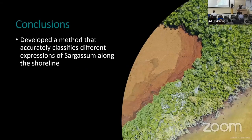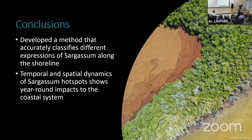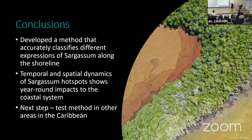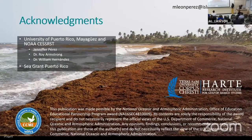To conclude, we were able to develop a method that accurately classified three types of expression of sargassum. The temporal and spatial dynamics show that impacts are occurring during the whole year. The next step will be to apply this method in other areas in Puerto Rico and also in the Caribbean. I would like to thank all the people and entities that have helped, including NOAA, collaborators in Puerto Rico, and CCME for making this possible.